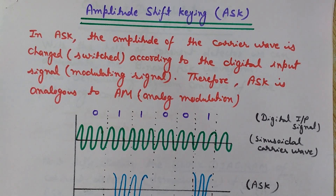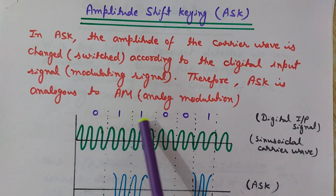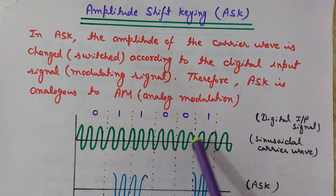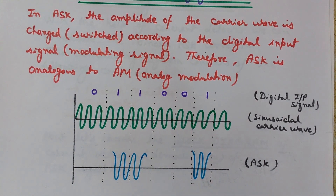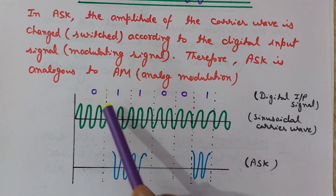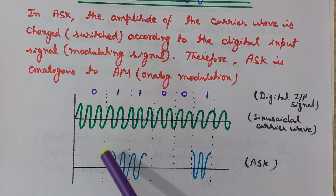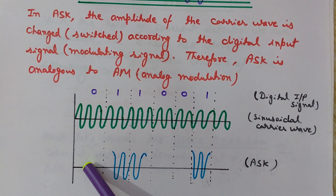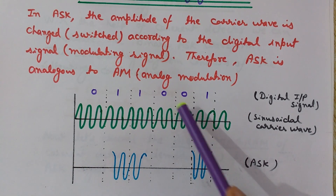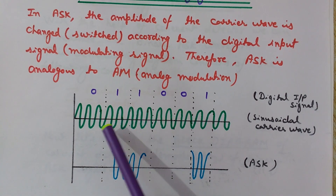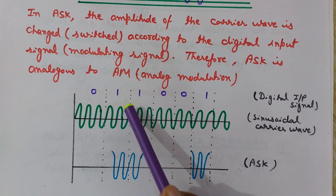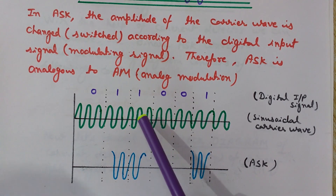Here you can see the digital input signal: 0 1 1 0 0 1, which is digital in nature, and this is a sinusoidal analog carrier wave. In amplitude shift keying, whenever we want to transmit 0 then no transmission happens — the carrier wave is not transmitted. So at those places there is no transmission of the carrier wave.